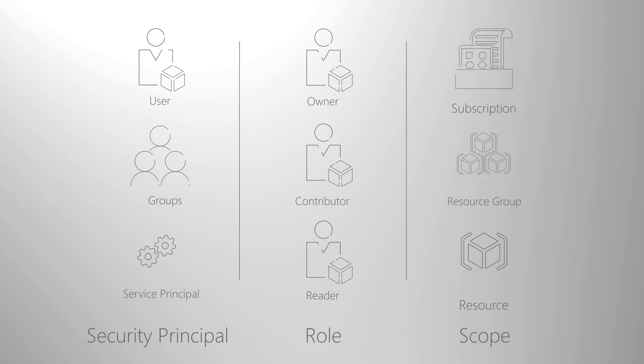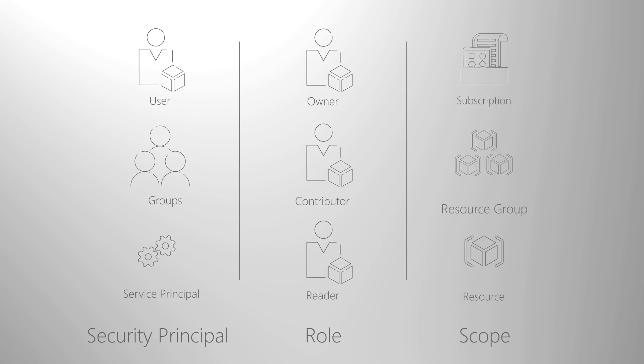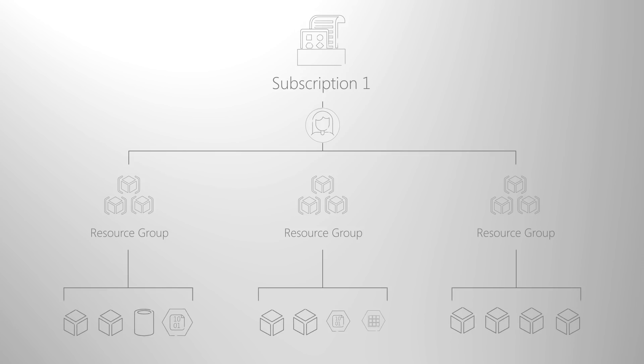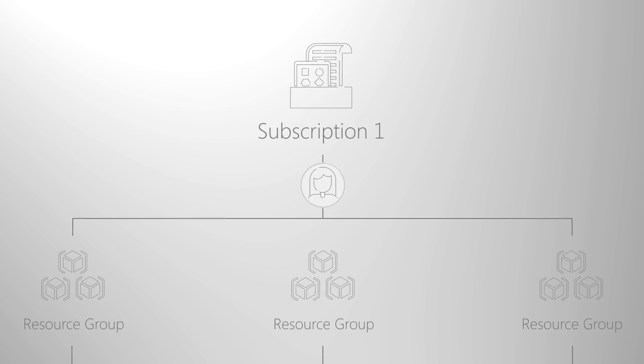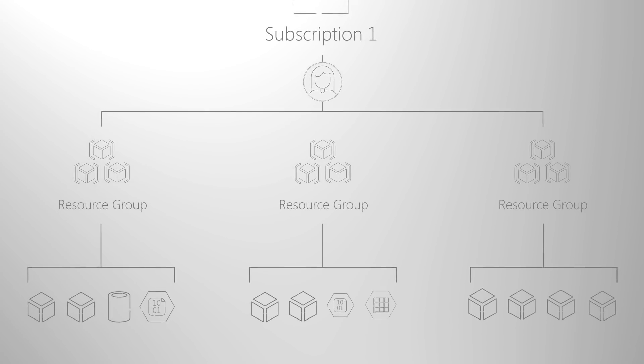You can grant access to resources by assigning a user, group, or service principal — such as a process or an application — to a specific role at a specific scope. The scope can be at the level of the subscription, a resource group, or an individual resource, such as a VM. When a role assignment is made on a subscription or resource group, the assignment is inherited by the resources within that scope.